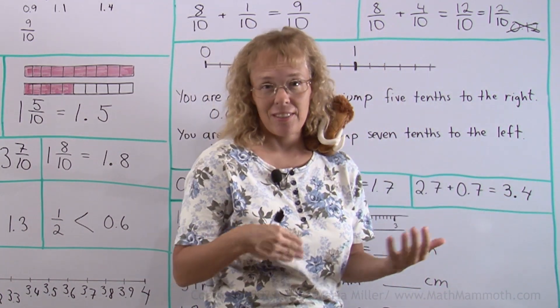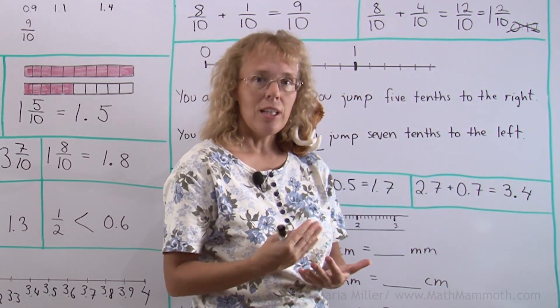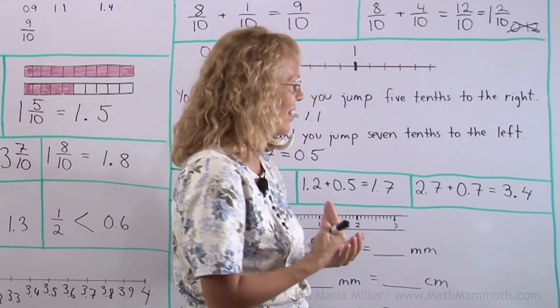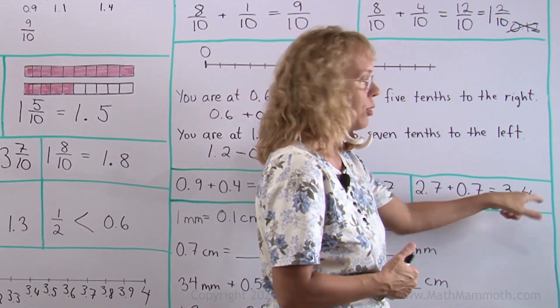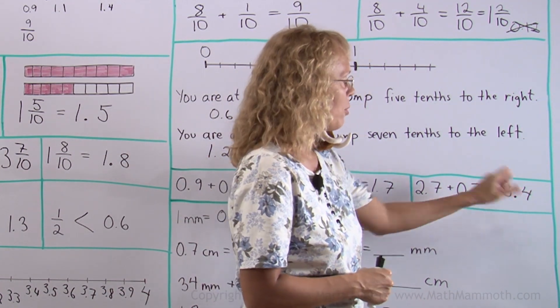We will get 3.4 or 3 and 4 tenths. You can basically add 27 and 7, get 34. But just think of them as being tenths. Here has 7 tenths. This is 27 tenths. And you get 34 tenths. Then you put the decimal point there.